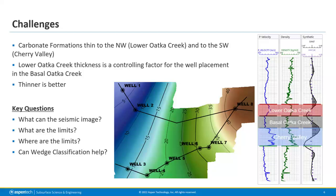With the synthetic seismic — a statistical wavelet extracted and convolved with the reflectivity from the impedance logs — we can see that we're right at tuning thickness already. This is an example from well eight, one of the thicker regions. We're already pushing the limits of separability here. So what can the seismic image, what are the limits, and where are these limits?